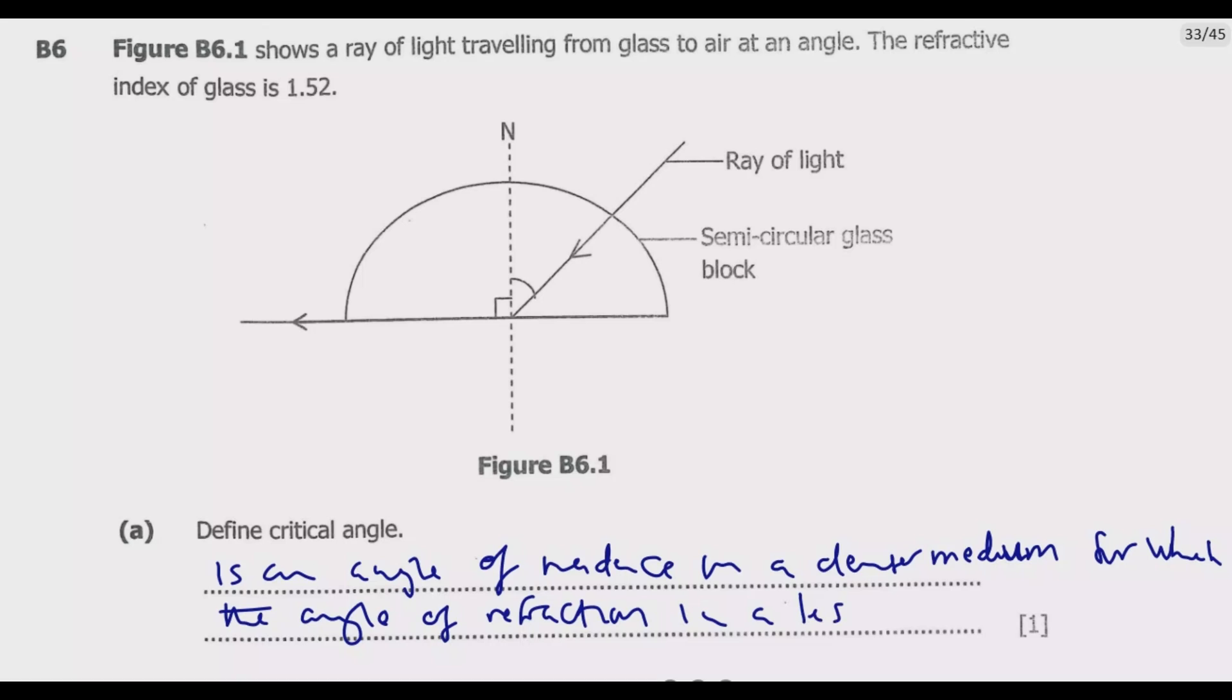We are looking for this angle of incidence in such a way that this refracted ray is 90 degrees to the normal. So this angle I is the critical angle.